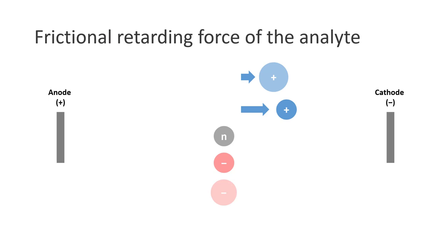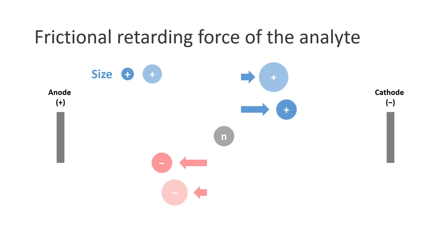Similarly, the larger anions will move slower towards the positively charged anode. In addition, the frictional retarding force of an analyte not only depends on the size but also the shape of the analytes, as well as the viscosity of the medium. The more viscous the medium is, the slower the electrophoretic mobility.